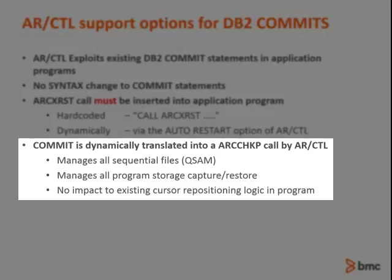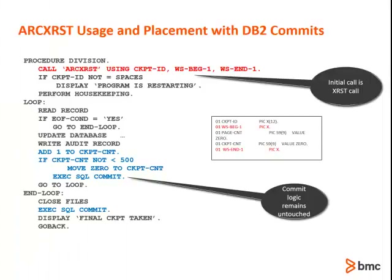The ARC checkpoint call has a larger scope than the native DB2 commit, as ARC will automatically manage any flat files in the program. Additionally, ARC will capture the program storage that was identified on the ARC restart call. Any logic in the program to reposition the DB2 cursor will remain unaffected. In order to make a program restartable, the ARC restart call must be issued before any actual program logic gets underway. The presence of the ARC restart call will convert the DB2 commit calls into ARC checkpoint calls, expanding the scope of the hard-coded DB2 commit calls as ARC will process the non-DB2 components of the application checkpoint in addition to the usual processing performed by the DB2 commit.